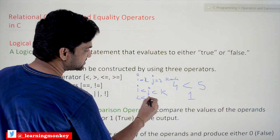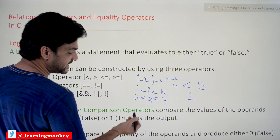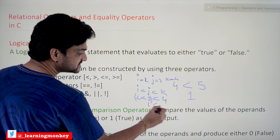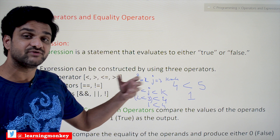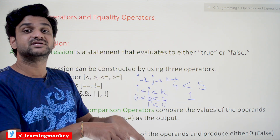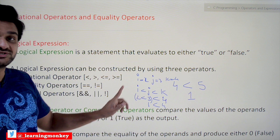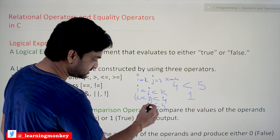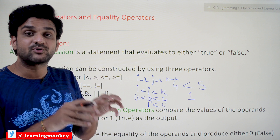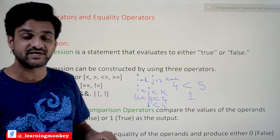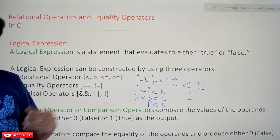What actually happens is: first, i and j are compared — 2 < 3 is true, so the output is 1. Then that result, 1, is compared with k (which is 4), not 3 compared with 4 as we expected. So 1 < 4 is evaluated instead. This is a common pitfall with chained relational operators, so we should be very careful when writing such expressions.